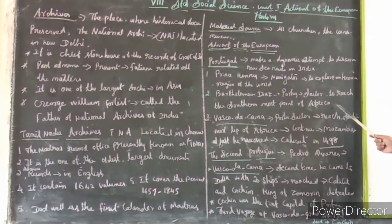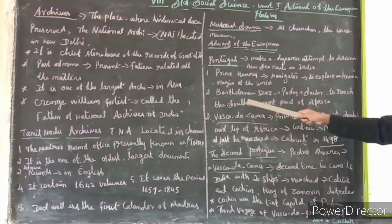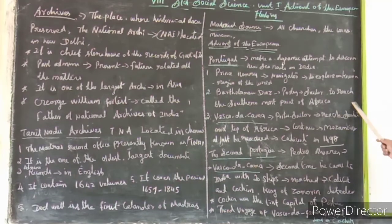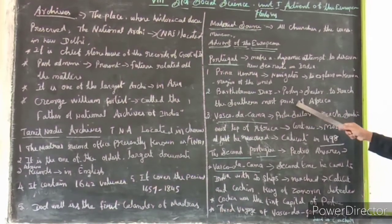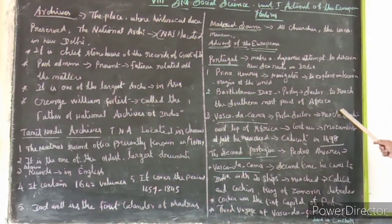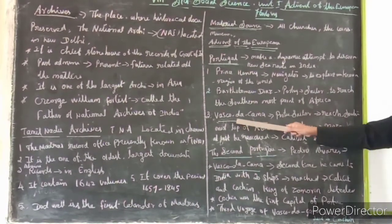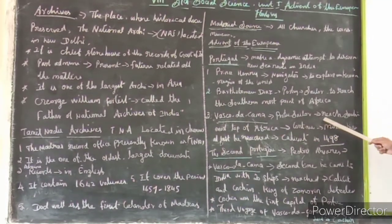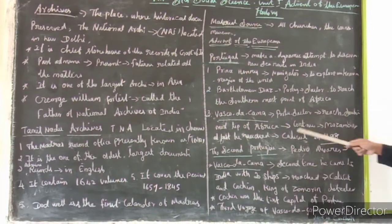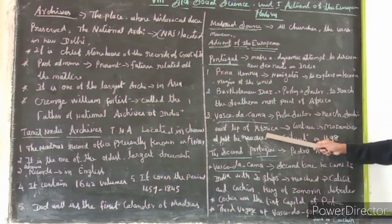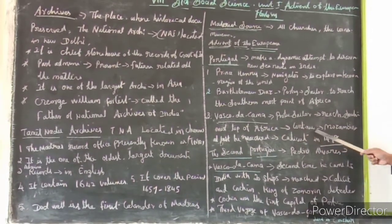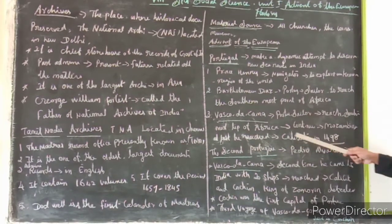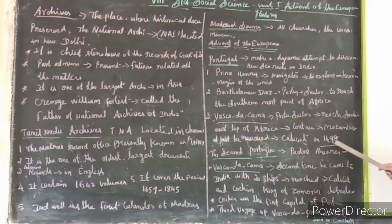The second person was Bartolomeu Dias, the Portuguese sailor. He reached the southernmost point of Africa. Next was Vasco da Gama, also a Portuguese sailor. He first reached the southernmost point of Africa, then continued the sea way, and at last reached Calicut in 1498.